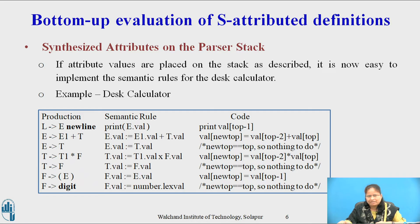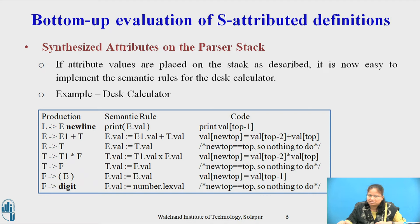To evaluate attributes, we modify the parser to execute the code fragment as shown in the table below. The code fragment is obtained from the semantic rule by replacing each attribute by a position in the val array. When a production with r symbols on the right side is reduced, the value of ntop is set to top - r + 1. After each code fragment is executed, top is set to ntop. For the production L → E newline, the semantic rule is print(E.val) and the associated code is print(val[top-1]).